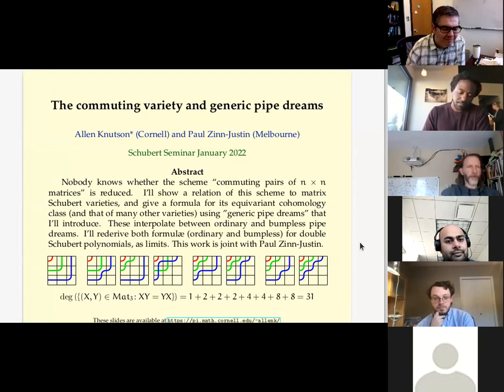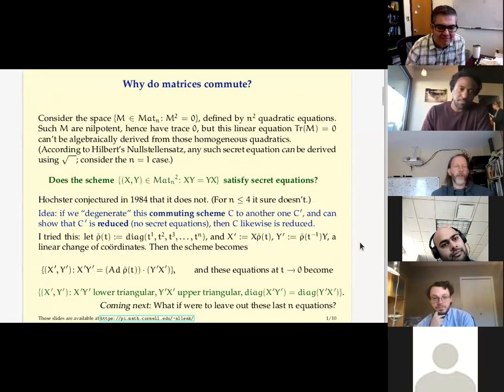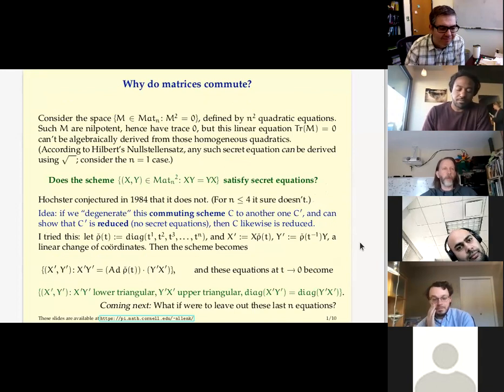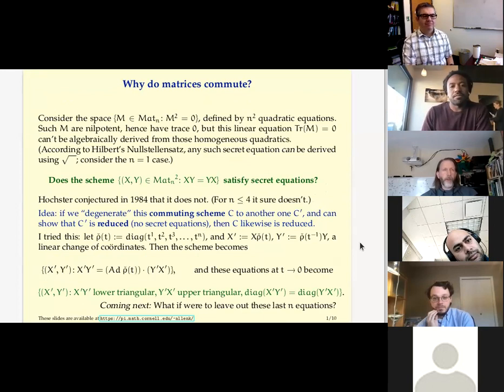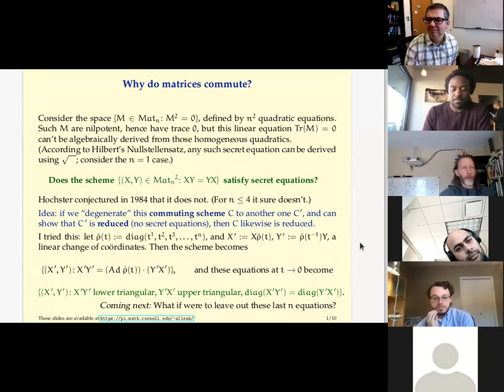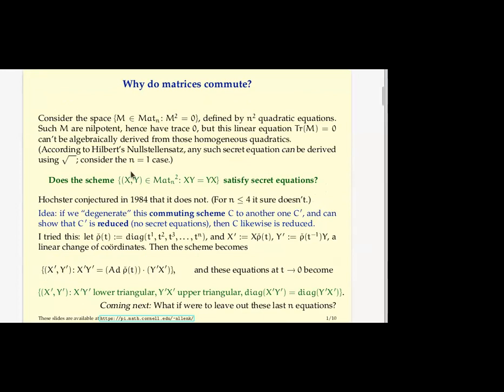Thanks for having me. So I'm starting off with a non-Schubert thing, which is the space of pairs of commuting matrices. If I tell you I'm thinking about pairs of matrices and I'm imposing these n² many quadratic equations that say the matrix entries of x, y, simultaneous quadratic in the x, y entries equals the corresponding matrix entry in y, x.